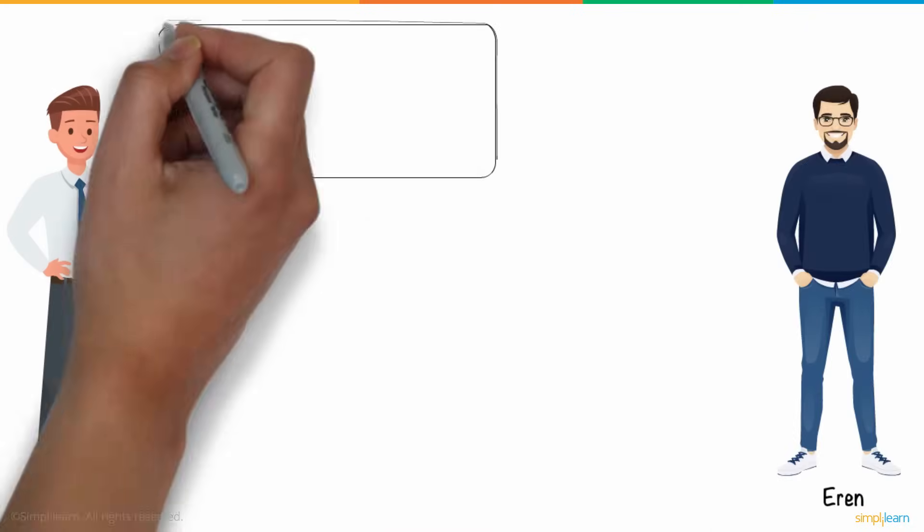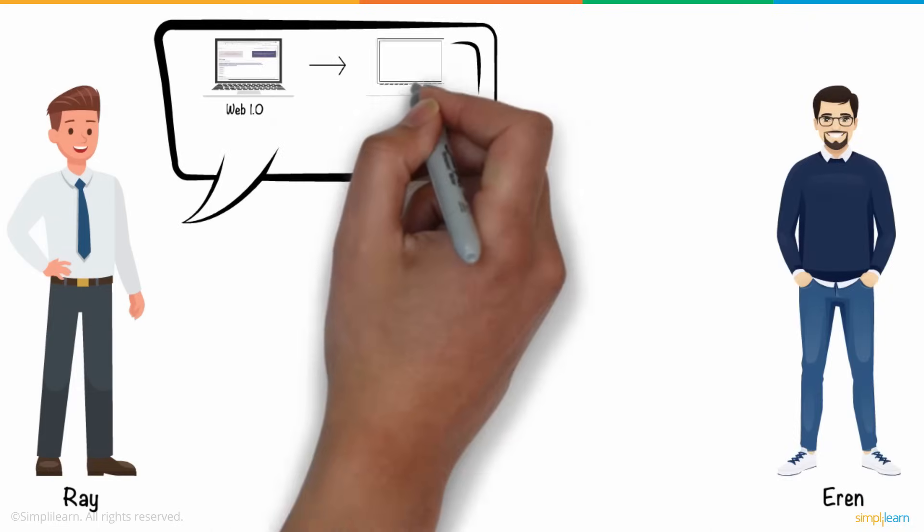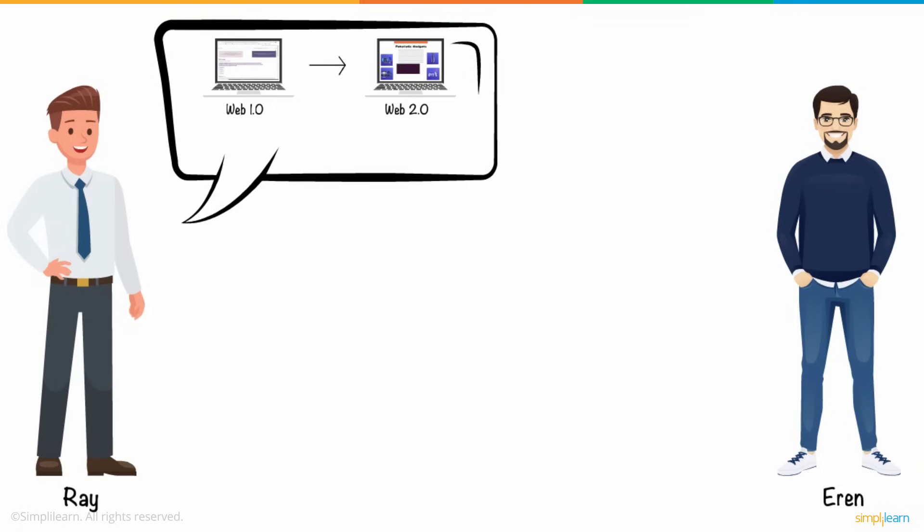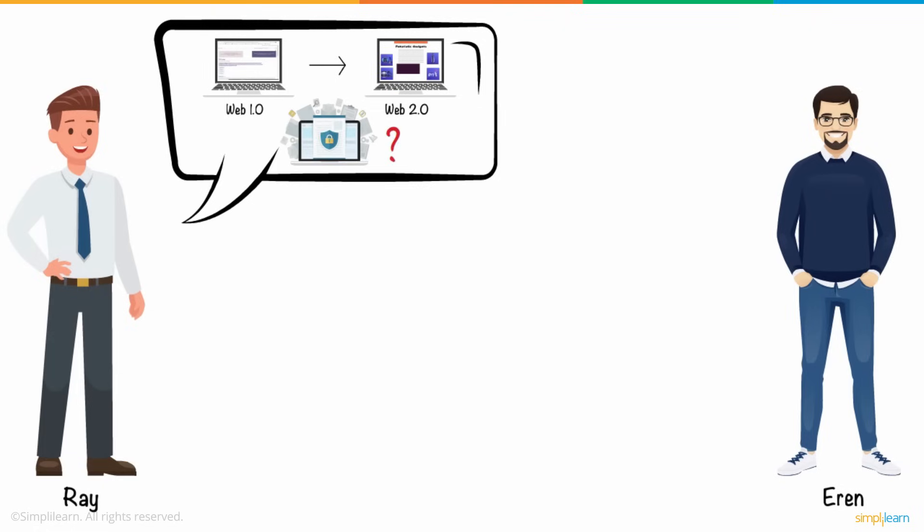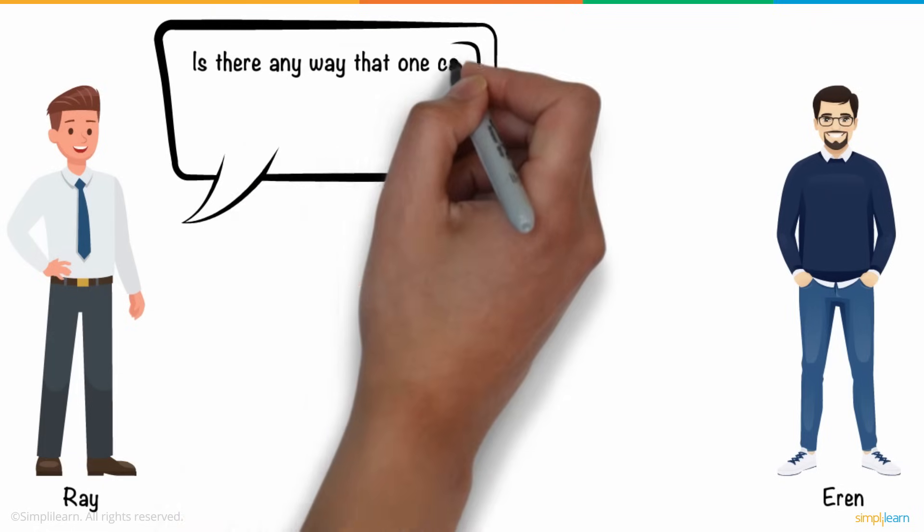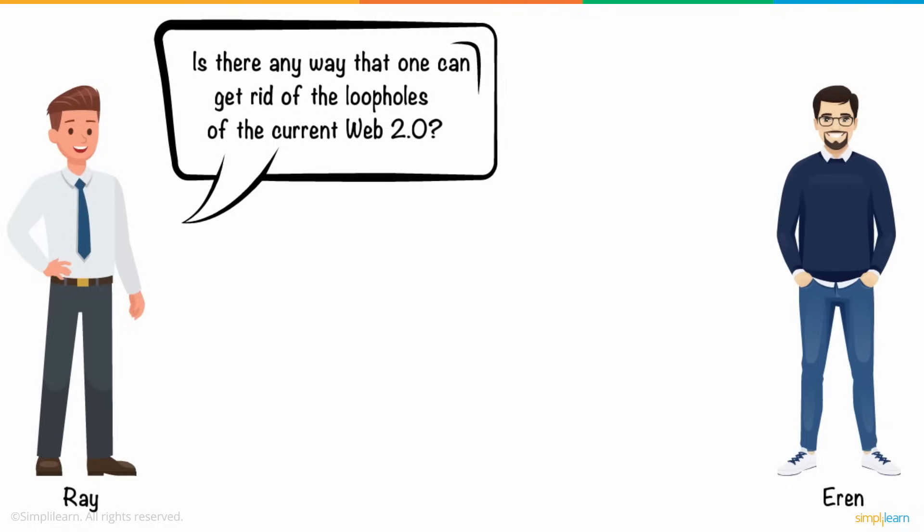Ray was fascinated by how the internet has evolved and how it works amazingly. But at the same time, he was concerned about the lack of privacy offered by it. Ray, out of his concern, asked Aaron, Is there any way that one can get rid of the loopholes of the current Web 2.0?